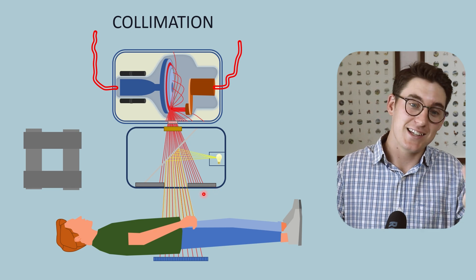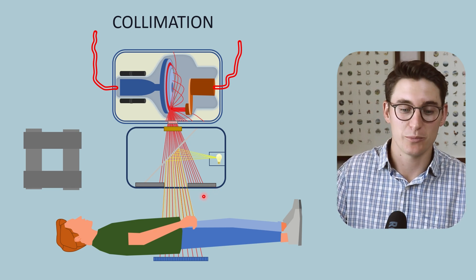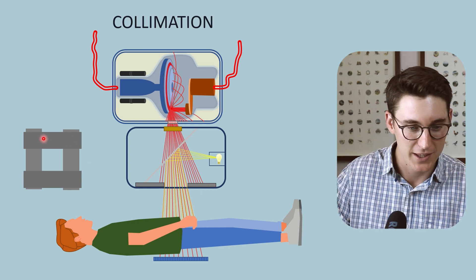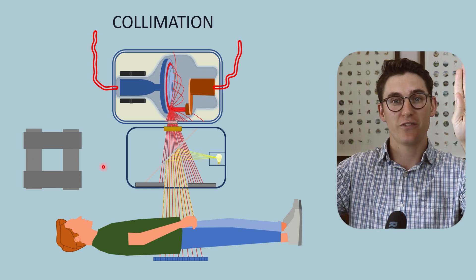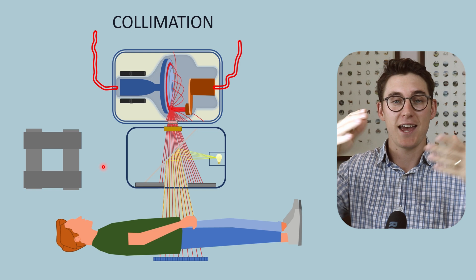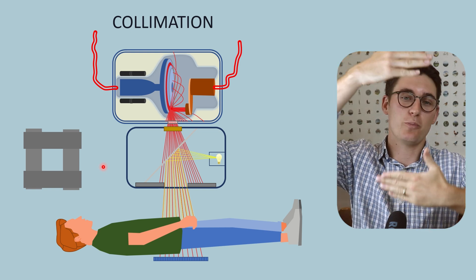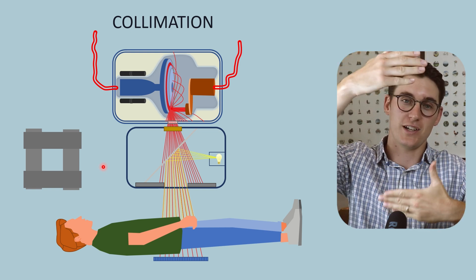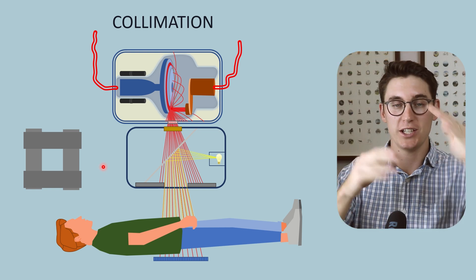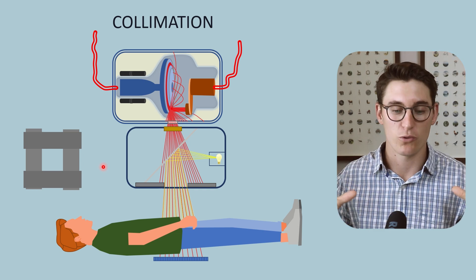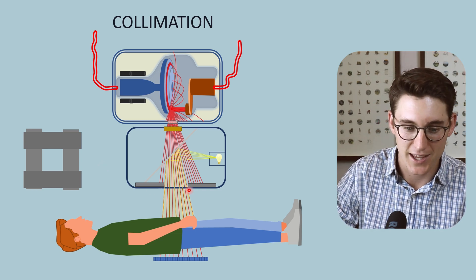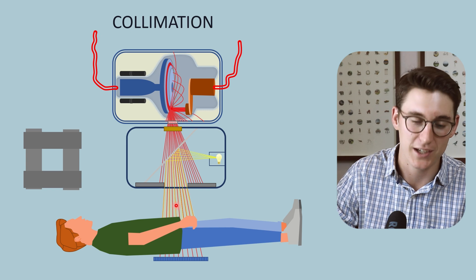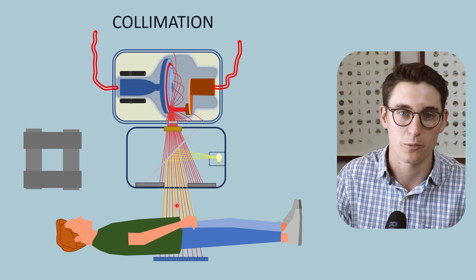If we look underneath the collimator machine from the patient's view, this is what the collimating sheets look like: two parallel sheets of lead that can move in and out, and another two parallel sheets of lead that can also move in and out. Those sheets moving reduce or expand our field size and determine how many x-rays make it through towards our patient.